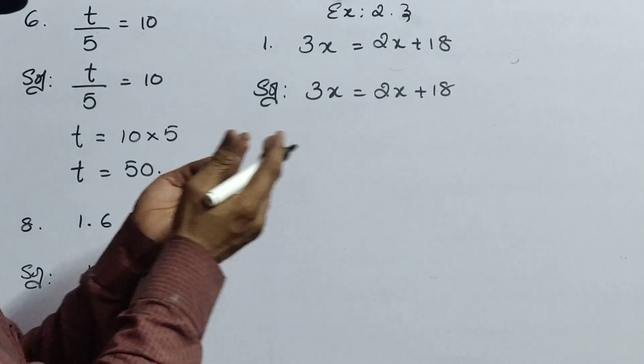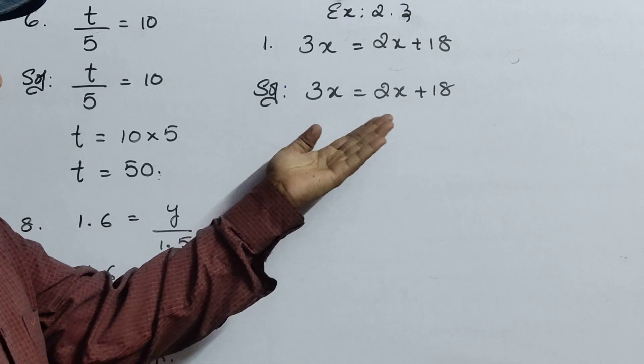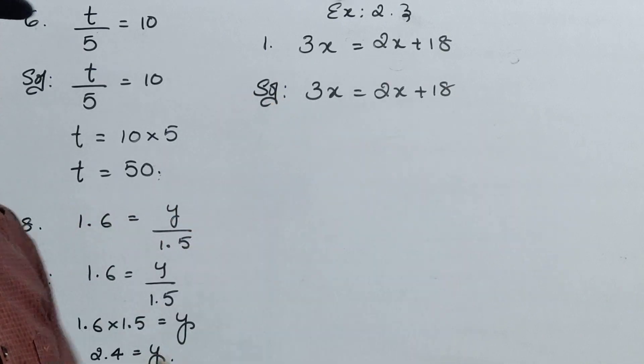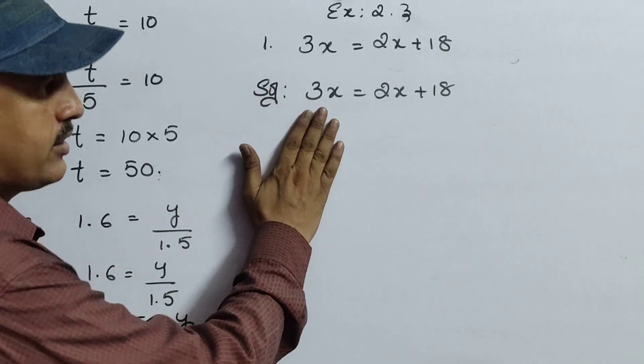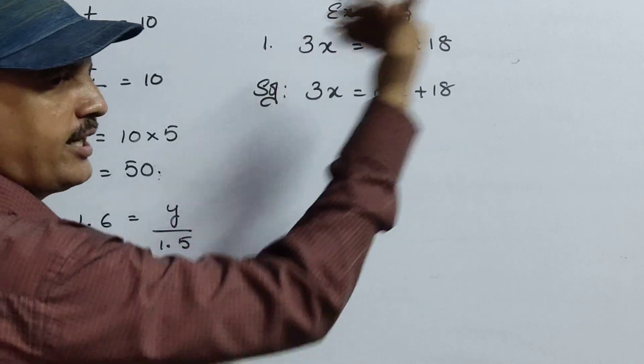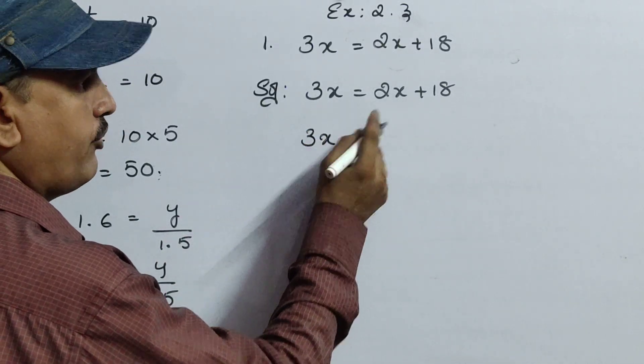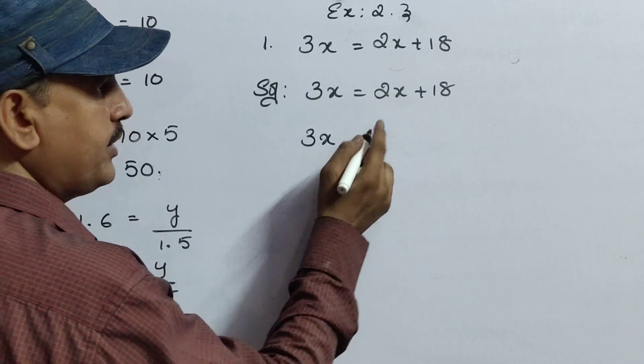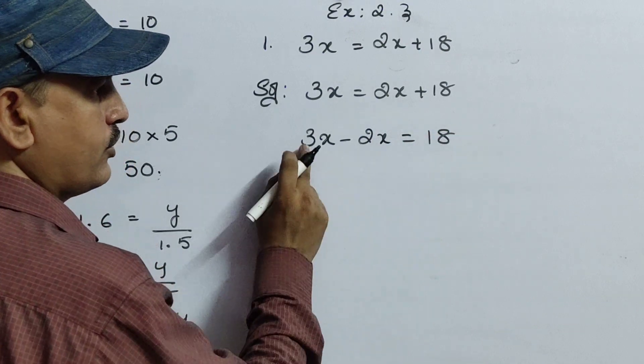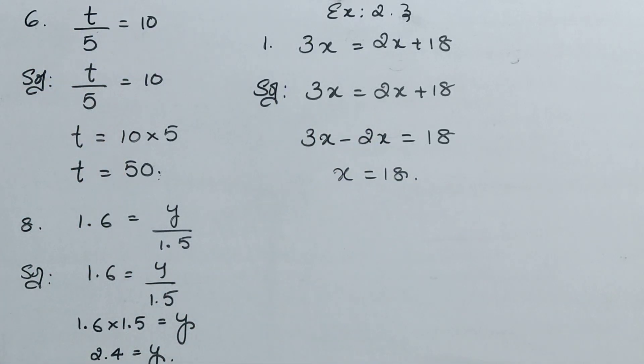Now bring all the x terms to left hand side, because 3x is left hand side. Bring all the x terms to left hand side. And if any numbers are there in the right hand side, send to right side. If any variables means x variables or y variables, whatever it may be, first bring all to the left side. Any numbers are there, send to right side. Now here 3x, now here it is plus 2x. This side it will come as minus 2x equals to 18. So 3x minus 2x is x. So x equals to 18.